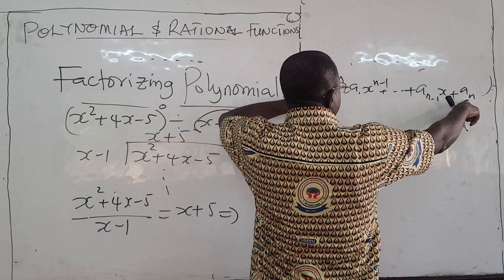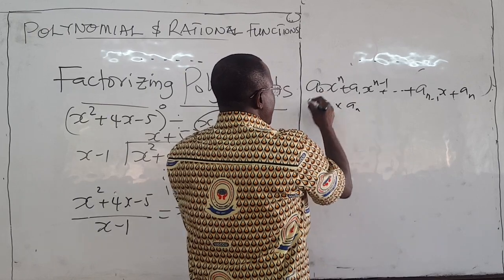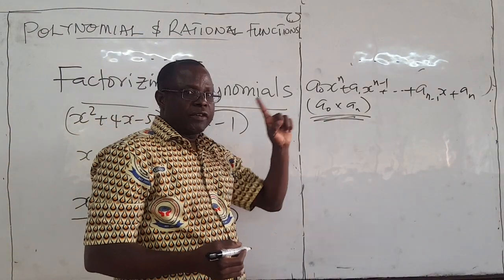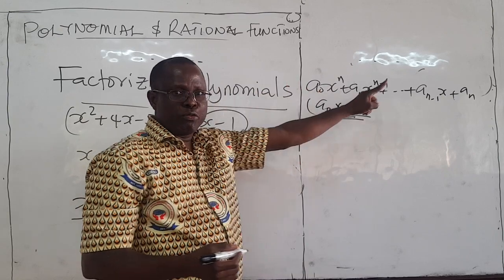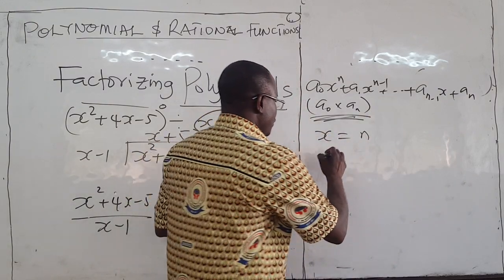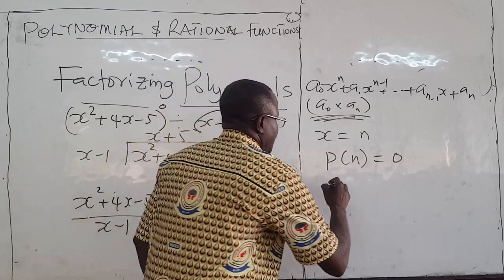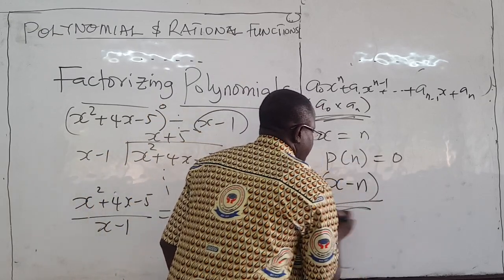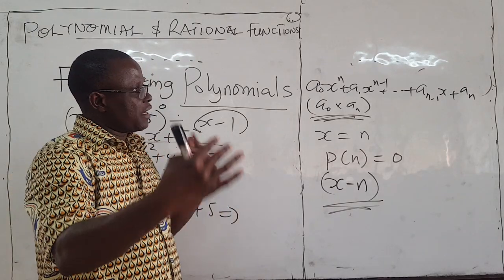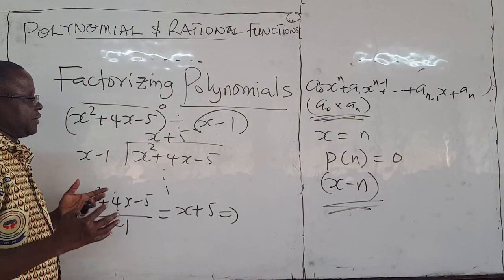Then look for the factors of that number — it's just a number like 2 or 6 or 8. Look for those factors that will cause the polynomial to go to zero. If x equals some number n makes p(n) equal zero, then x minus n is a factor of the polynomial. To get the rest of the factors, use long division. That is the general procedure for factorizing a polynomial.